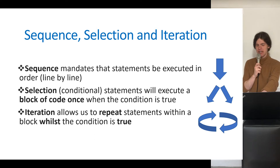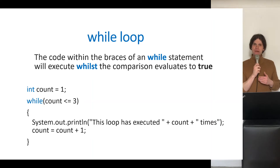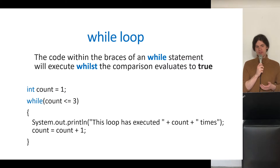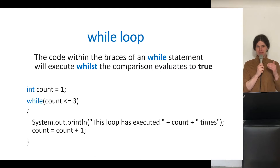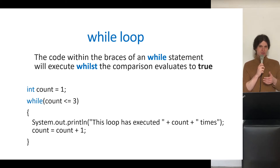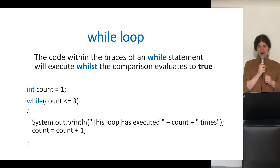We're going to have a look at the while loop first of all. Let's set up a simple example where we want to output a statement three times. We're just going to keep a record of how many times we've executed our loop and print out how many times it's been executed so far. To do this we're going to combine the constructs and concepts we've looked at so far.